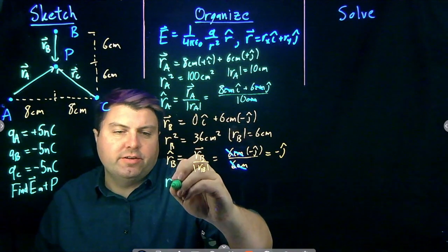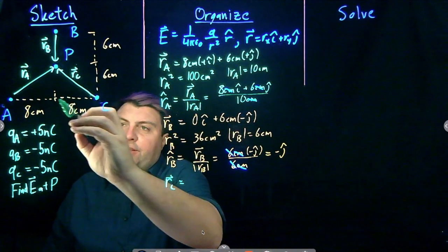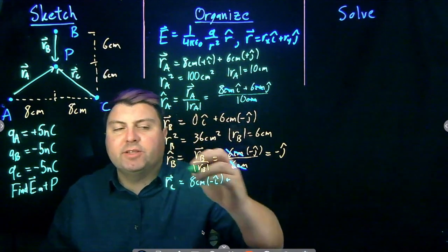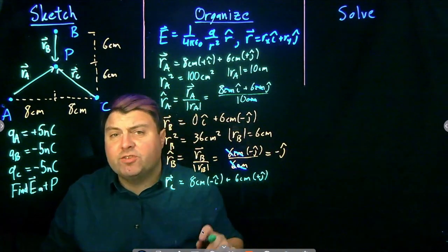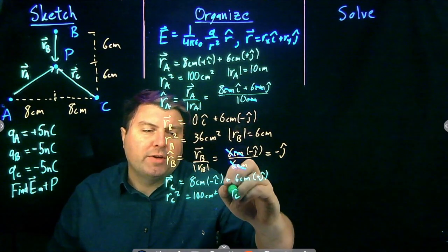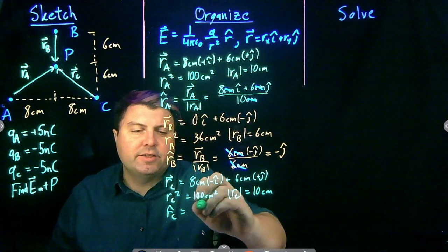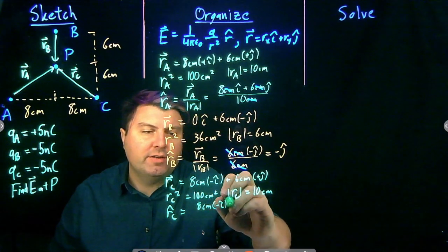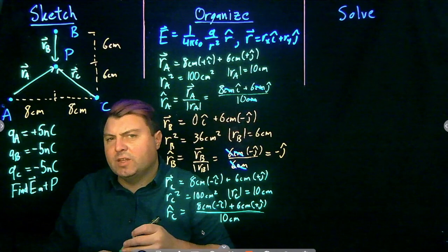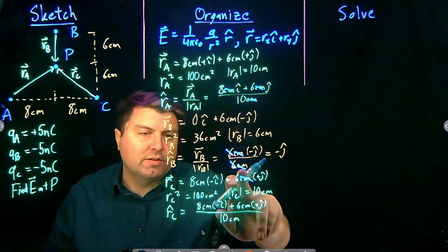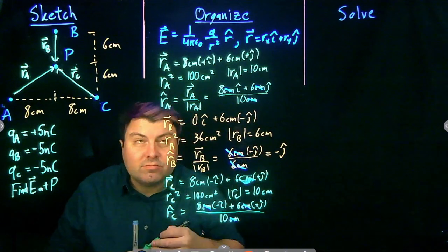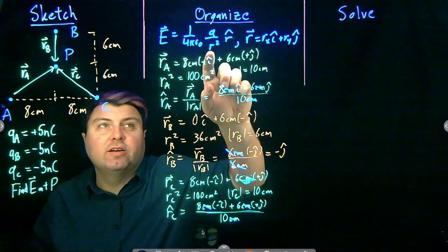Lastly, for R_C: I still go 8 centimeters in the X direction but now negative, so -8 cm î. I still go up 6 centimeters, so plus 6 cm ĵ. R_C squared is the same as R_A squared: 100 cm², and the magnitude of R_C is 10 cm. So R̂_C equals (-8 cm î + 6 cm ĵ) divided by 10 cm, with centimeters canceling. Now for each object, I have Q, R squared, and R-hat.